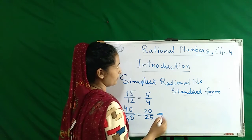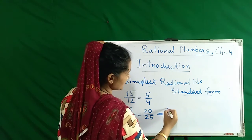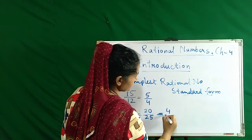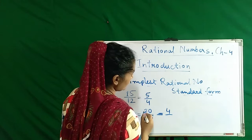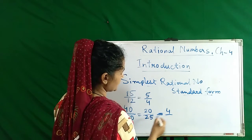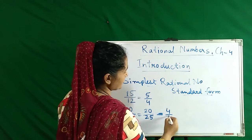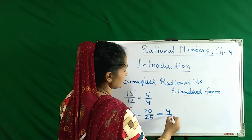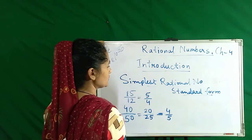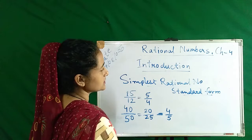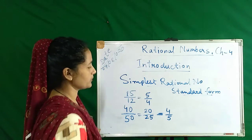We take the numbers again: 5 times 4 gives 20, and 5 times 5 gives 25. So we get 4 over 5. Now this is in standard form.